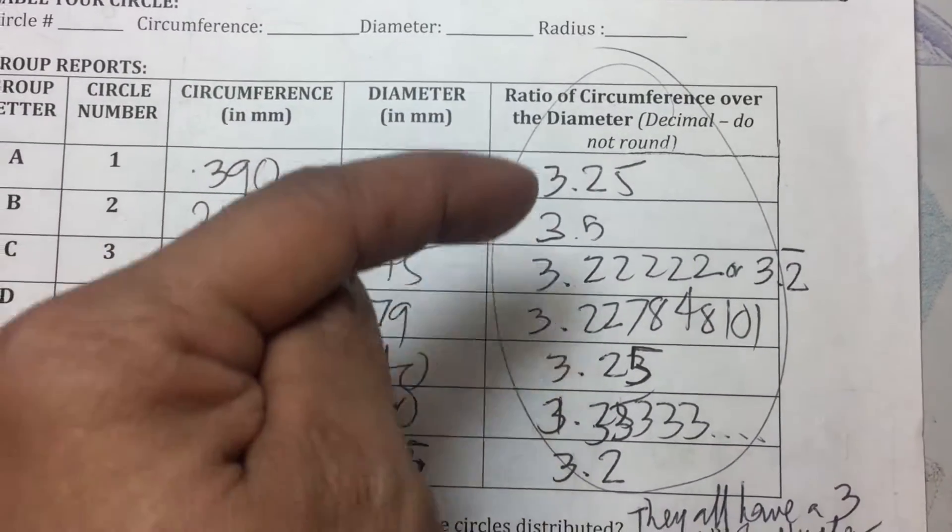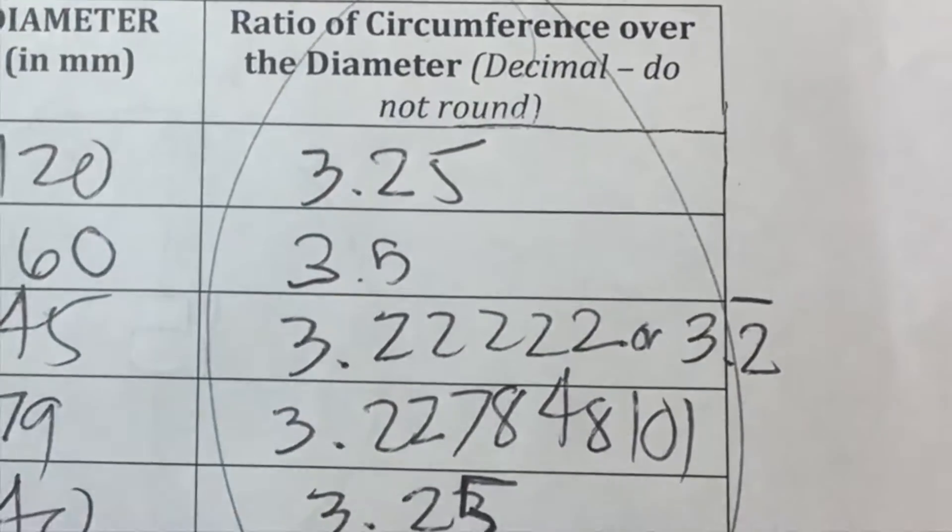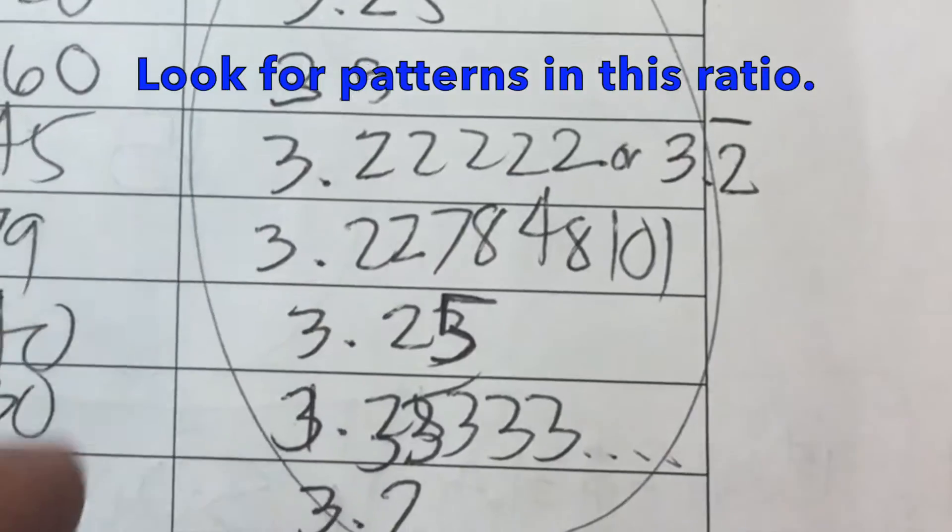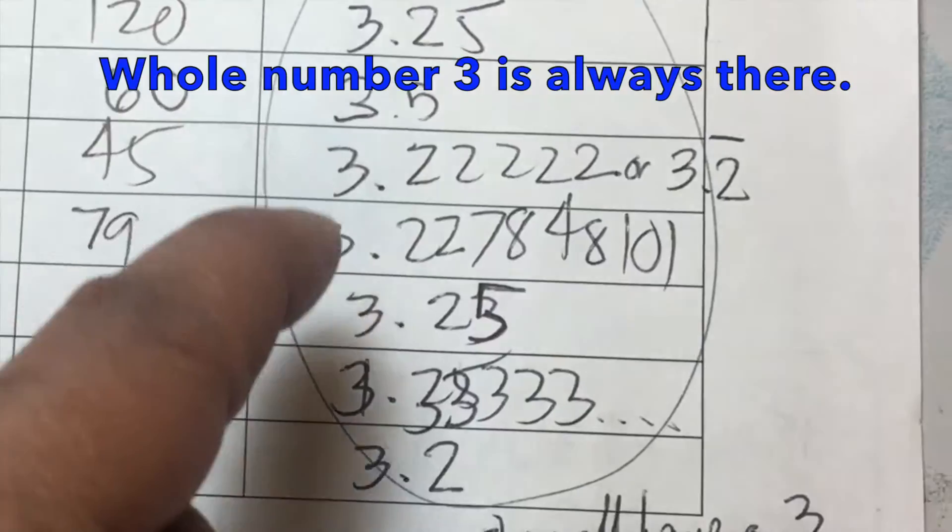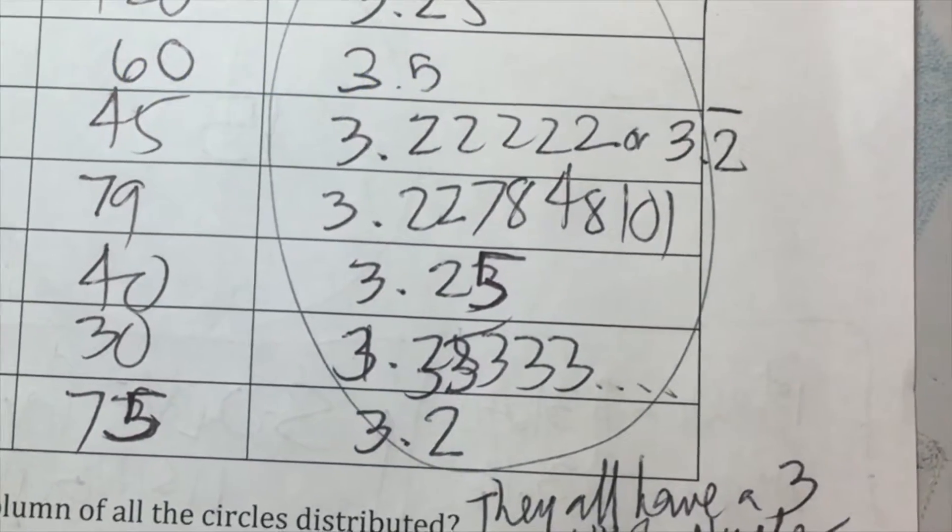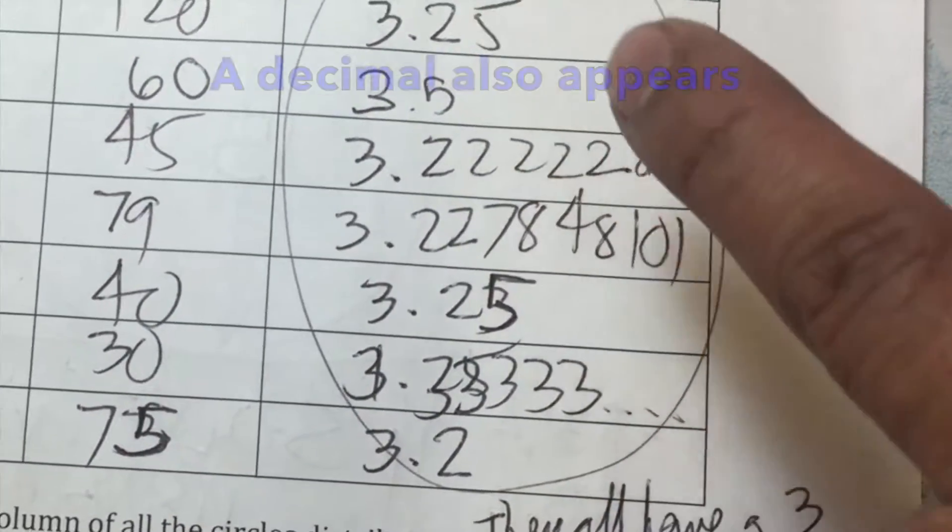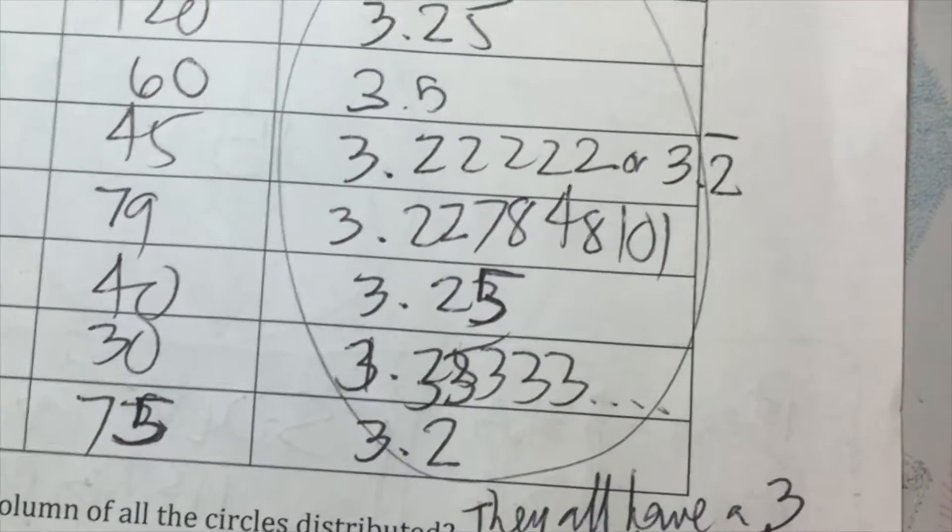They observed the ratio of the circumference and the diameter. They had an observation. They said we have a three as a whole number. The three always appears, and then there is also a decimal part of it. That's the observation.